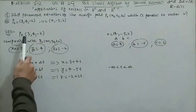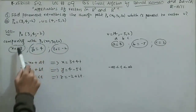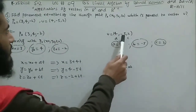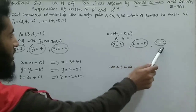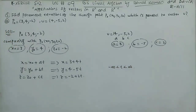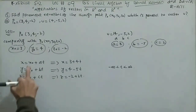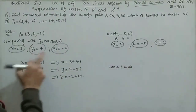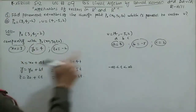From P0 = (3, 4, −2): x₀ = 3, y₀ = 4, z₀ = −2. From U = (4, −5, 2): a = 4, b = −5, c = 2. The parametric equations are x = x₀ + at, y = y₀ + bt, z = z₀ + ct. Substituting: x = 3 + 4t, and y₀ = 4, b = −5, so y = 4 − 5t.